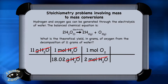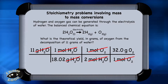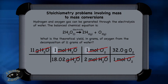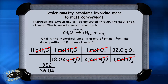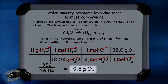Set up another conversion box to go from moles of oxygen to grams of oxygen. The molar mass for O₂ is 32.0 grams, determined by taking the molar mass from the periodic table and multiplying it by 2. Carry out the math by multiplying 11 × 1 × 1 × 32, which gives you 352. Then divide by 18.02 × 2, which equals 36.04. When you divide 352 by 36.04, you get 9.8 grams after rounding to the correct number of significant figures. So 9.8 grams of oxygen can be produced using 11 grams of water, according to the balanced equation.